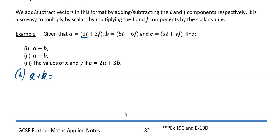For a plus b, the i parts of a are 3i and the i parts of b are 5i, so 3i plus 5i gives you 8i. For the j parts you've got 2j minus 6j, which is minus 4j. So the answer for a plus b is 8i minus 4j.